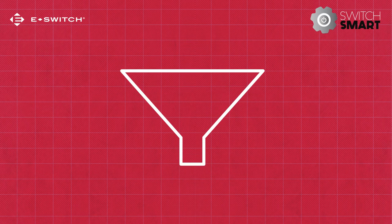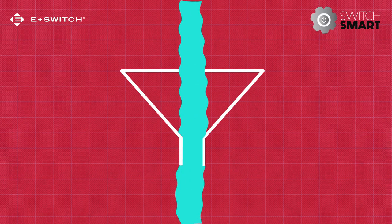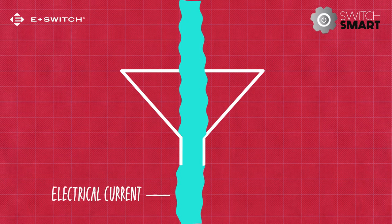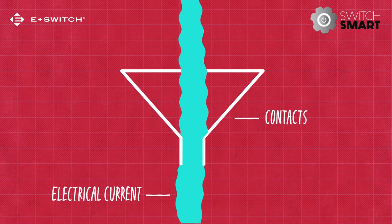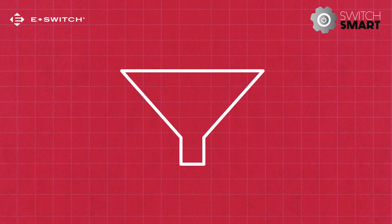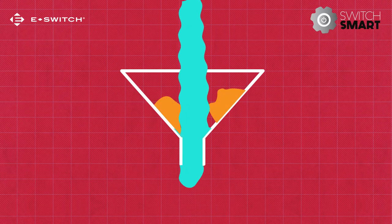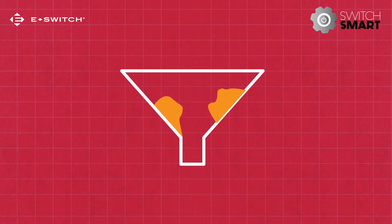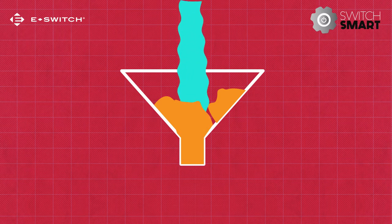We can visualize this by imagining water flowing through a funnel — the water being the electrical current and the funnel the contacts. Water flows through easily with minimal resistance. If we add another obstacle to the funnel, the flow of water has more resistance and slows down. If we add too many obstacles, the water will start to overflow.